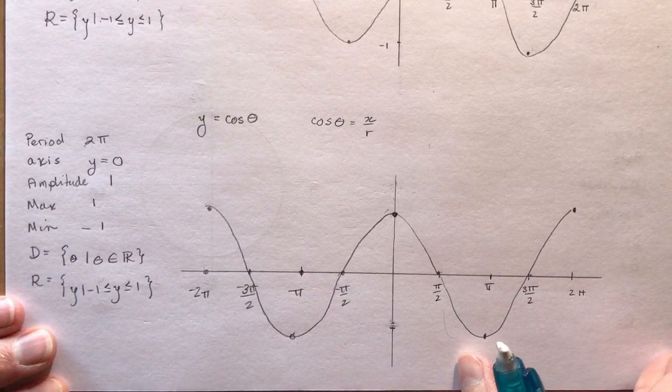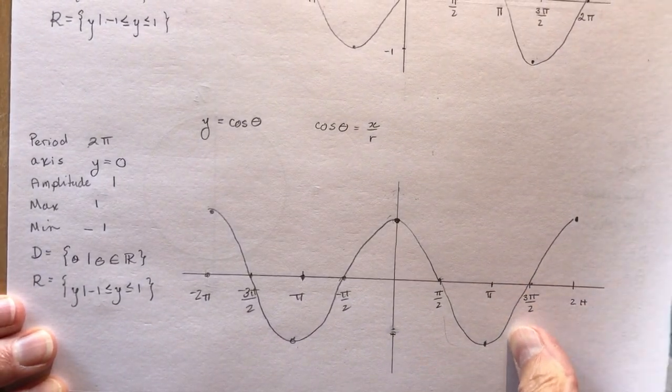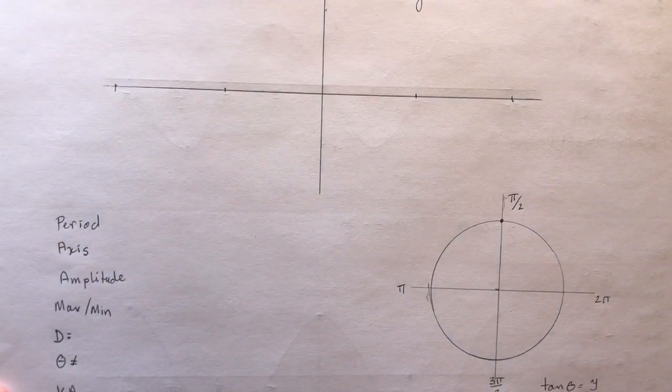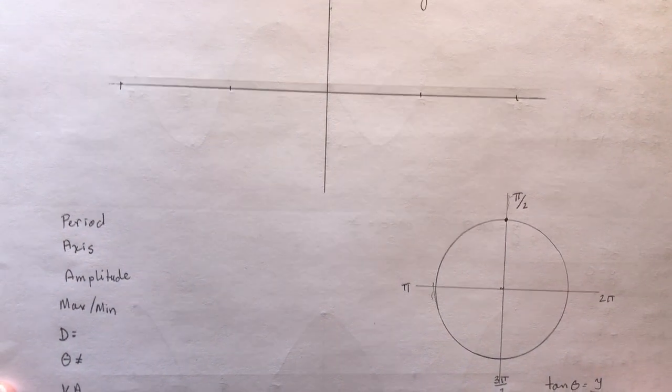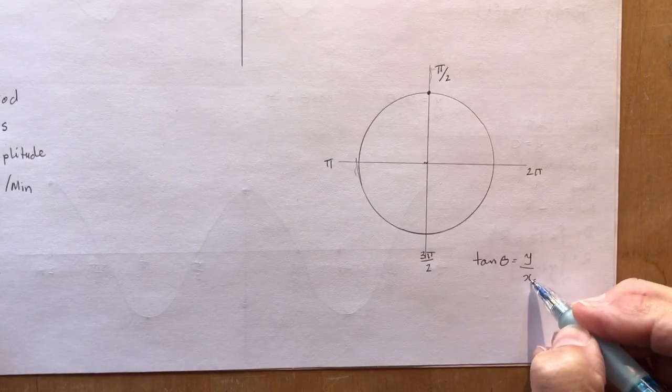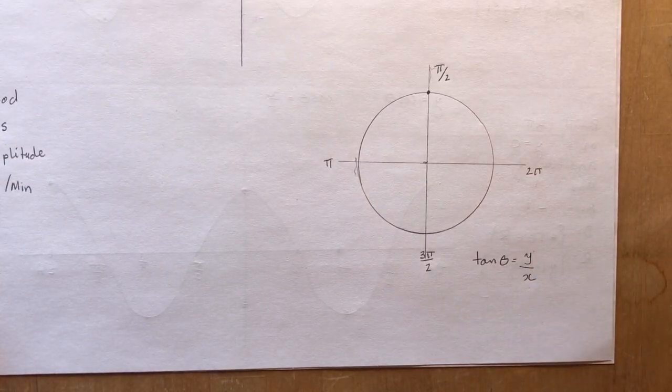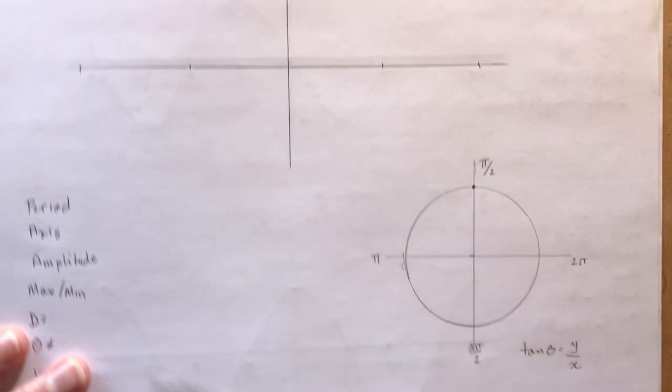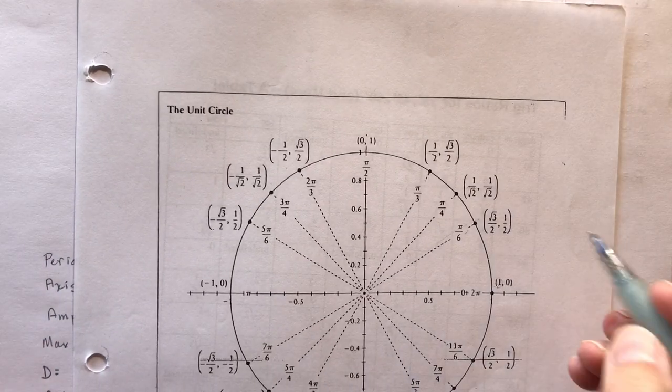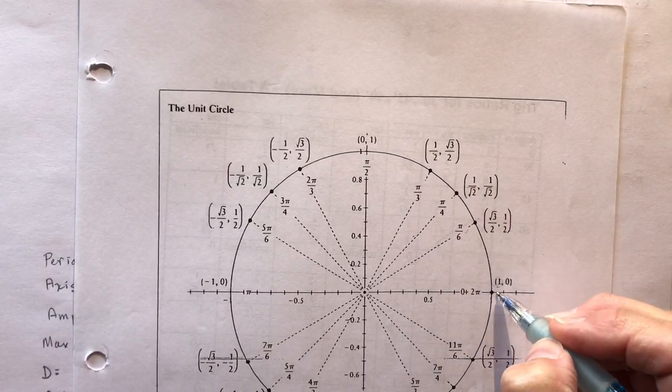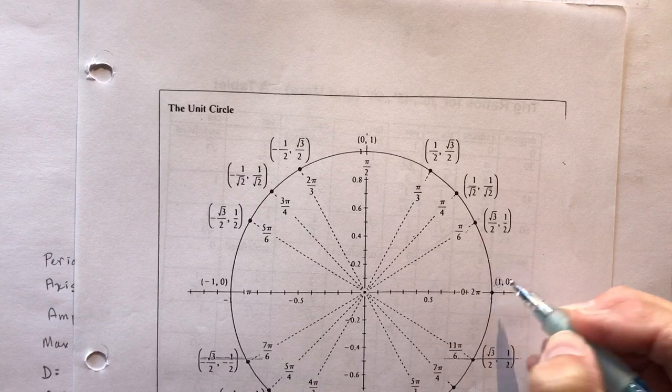Okay so let's take a look at the tan function because that's the only one that is a little different. Okay so tan theta. Remember when we have tan theta, tan theta is y over x. Y over x. So if we look at our graph here, our unit circle. So if we do y over x, so 0 would be 0 over 1, which is 0. So let's put that one on here first.